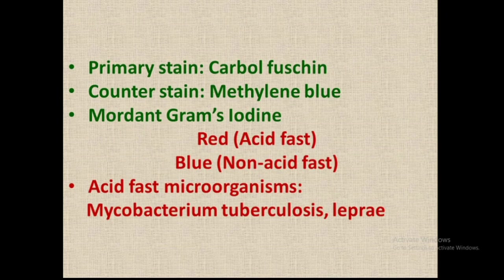In acid fast staining, the primary stain used is carbol fuchsin (red color), the counter stain used is methylene blue, and the mordant used is gram's iodine.